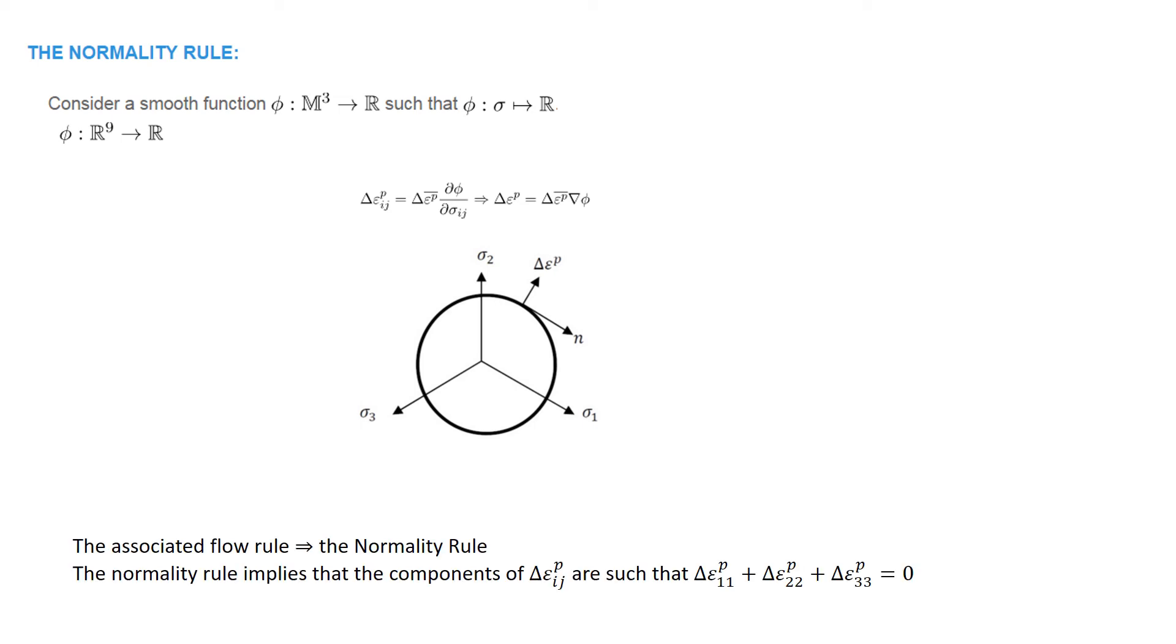Obviously, the associated flow rule leads to the normality rule, and the normality rule implies that the components of the plastic strain increment are such that the sum of the diagonal components are equal to 0.